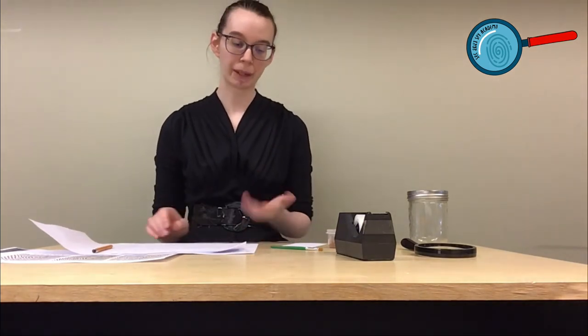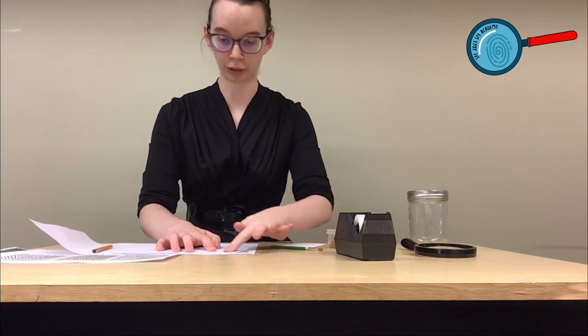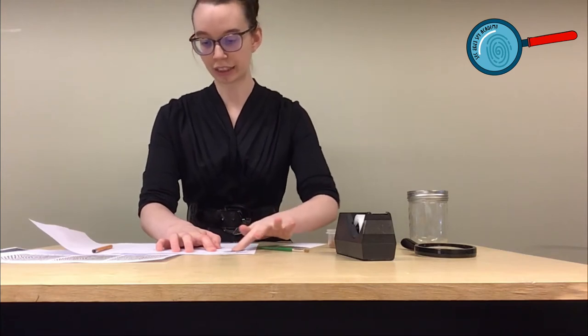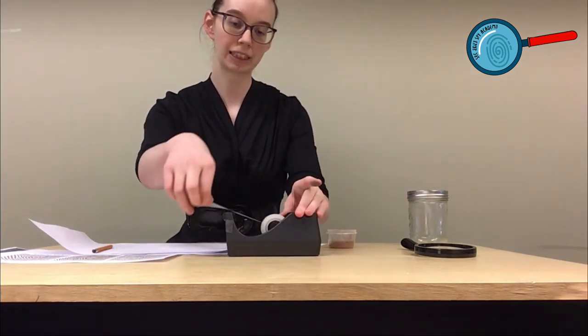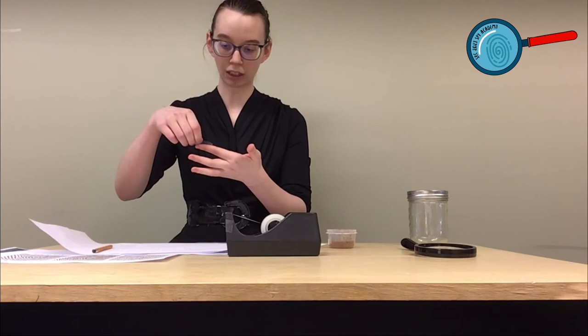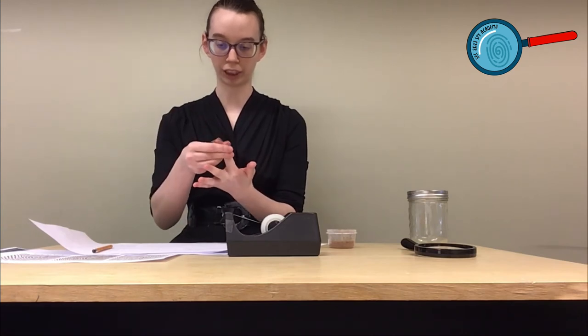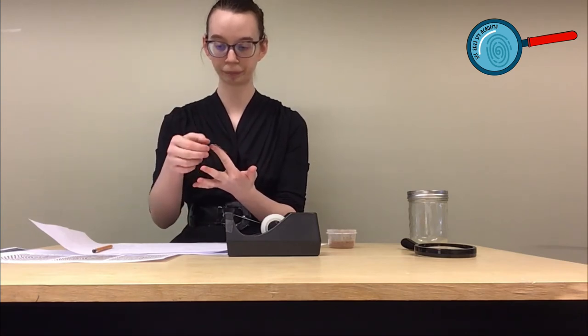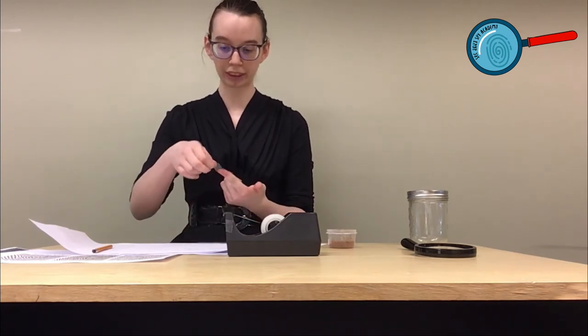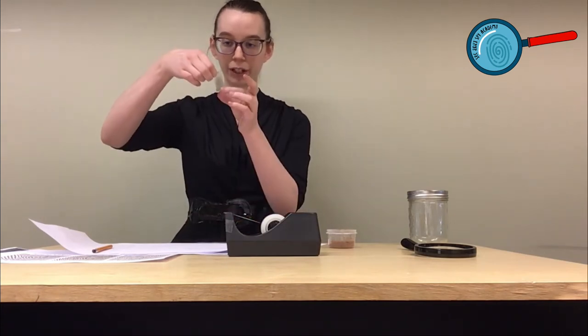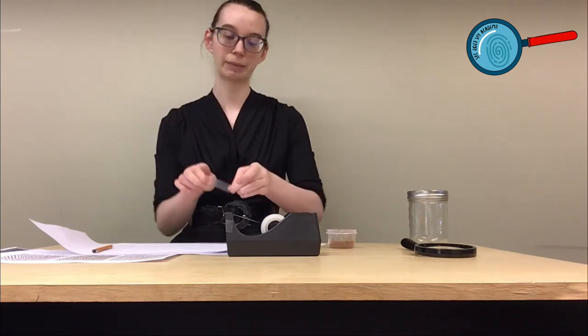Once you have your ink pad ready to go, you're going to take one of your fingertips and rub it against all of the pencil lead that you've just scribbled. You'll see that the pencil lead is going to stick to your finger. Now, once you've done that, we're just going to take a piece of tape and gently place it over the finger that we've just inked up. We're going to press it down gently and then we're going to lift it up. And you will see that your fingerprint is now on this piece of tape.